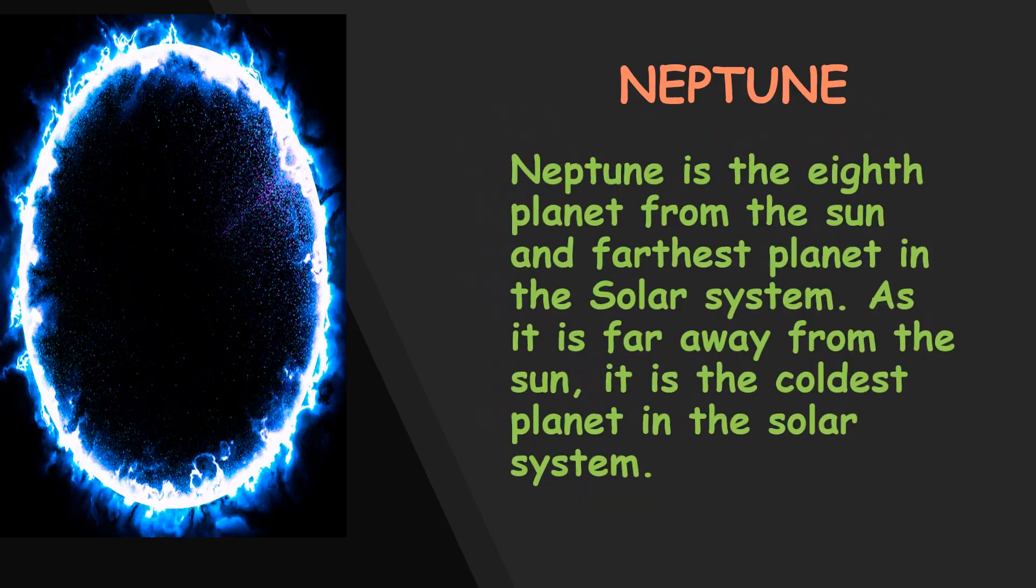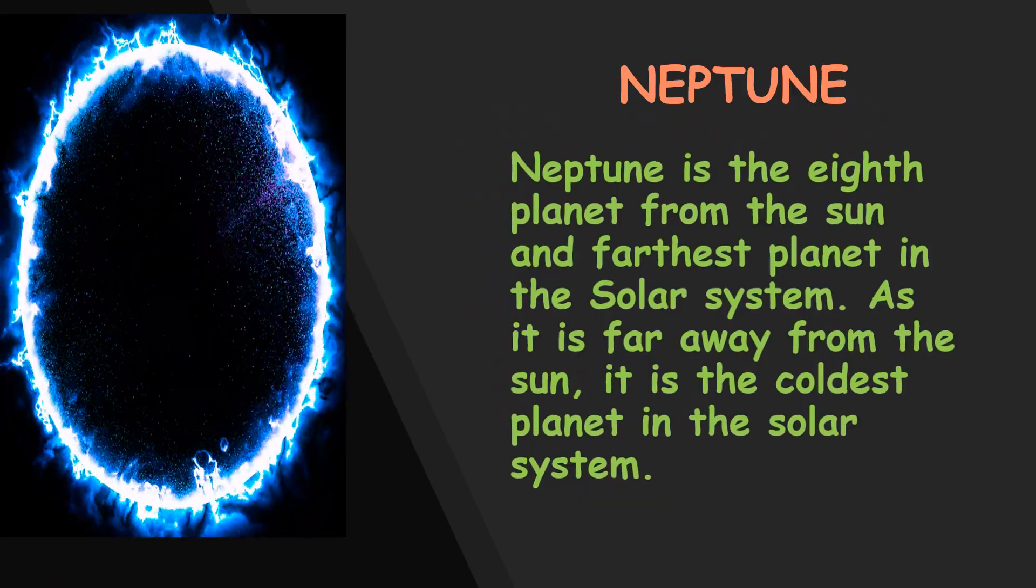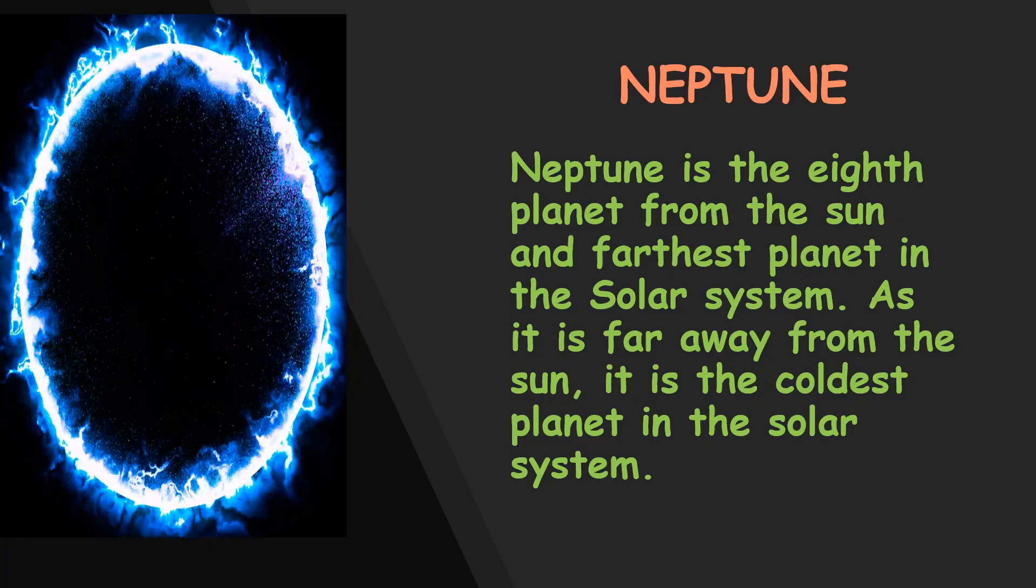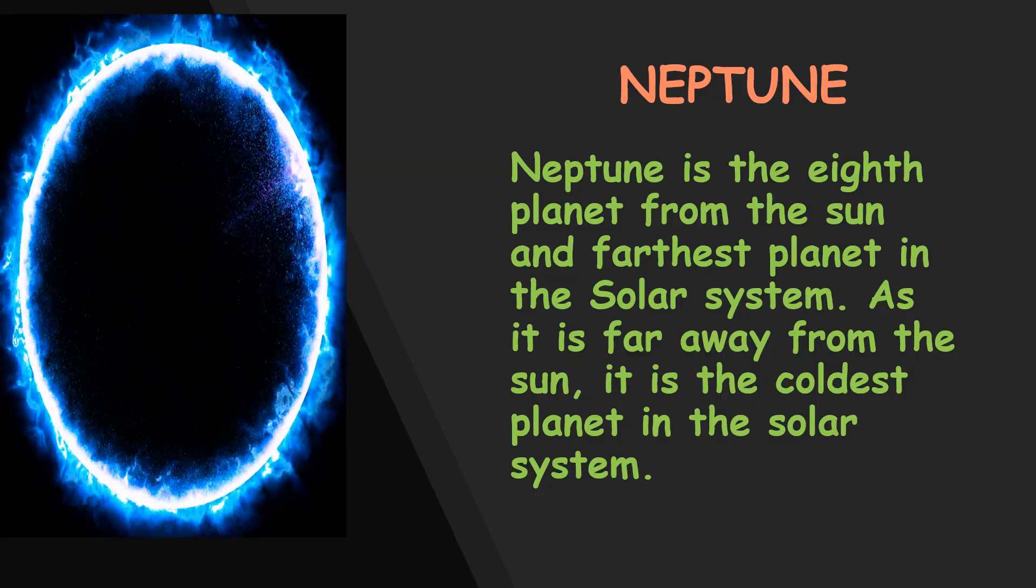Neptune is the eighth planet from the Sun and farthest planet in the Solar System. As it is far away from the Sun, it is the coldest planet in the Solar System.